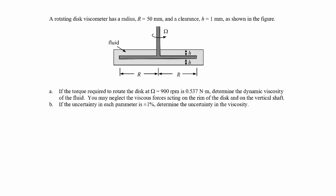In this example, we're told that we have a rotating disc viscometer, given that it has a certain radius and a certain clearance h — the distance between the rotating plate and the housing containing the fluid. All the light gray material is the fluid. We're told that the torque required to rotate the disc at a certain speed is given, and we're asked to determine the dynamic viscosity of the fluid. We can neglect viscous forces on the rim of the disc and the vertical shaft.